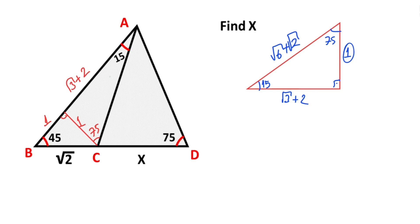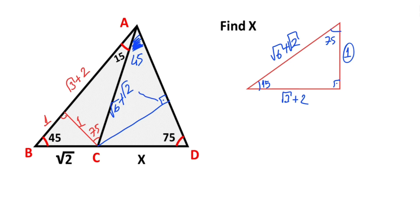If we apply this property to the question: if there is a 1 unit opposite the 15 degrees, opposite the 90 degrees the hypotenuse must be equal to root 6 plus root 2. And angle CAD equals 45 degrees. So if we draw one more perpendicular opposite the 45 degrees, and there is root 6 plus root 2 opposite the 90 degrees, then opposite the 45 degrees must equal y, where y equals root 6 plus root 2 over root 2.